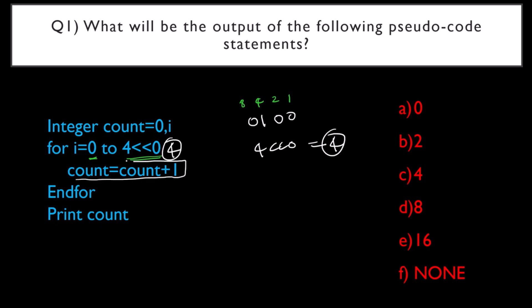4 times count equals count plus 1 will be executed and at the end when you print count, 4 is going to be outputted. That is option C is the answer.